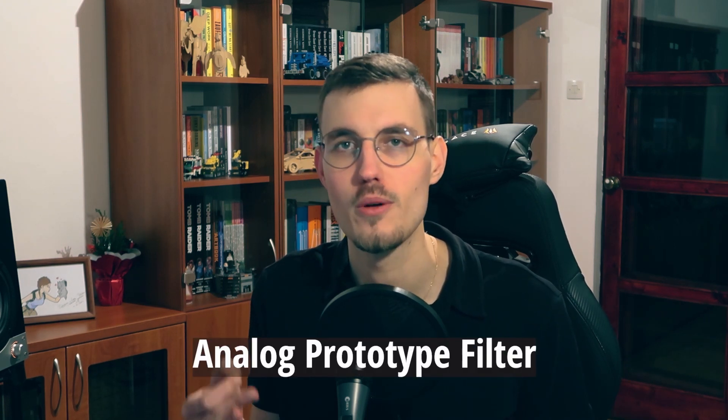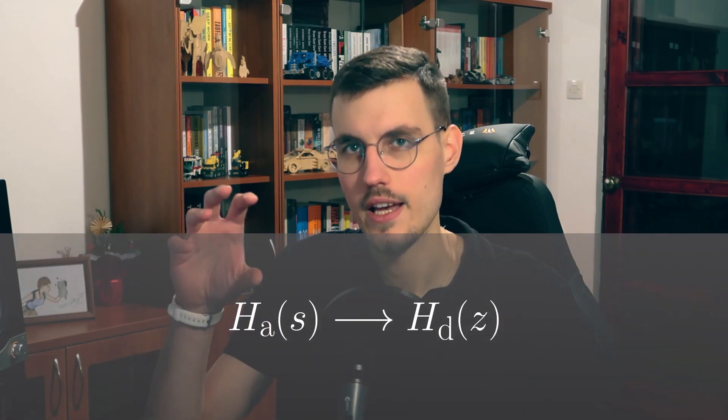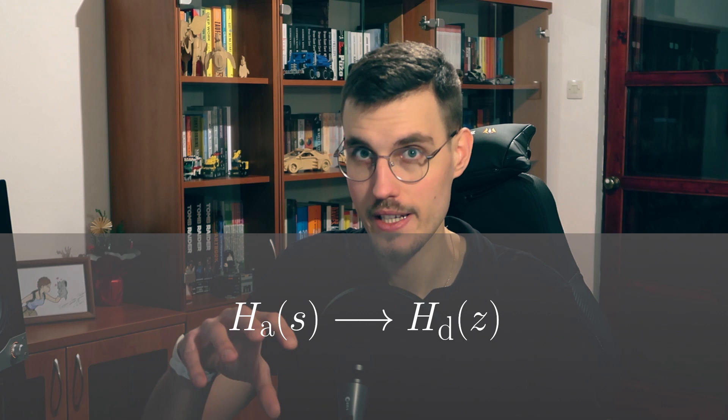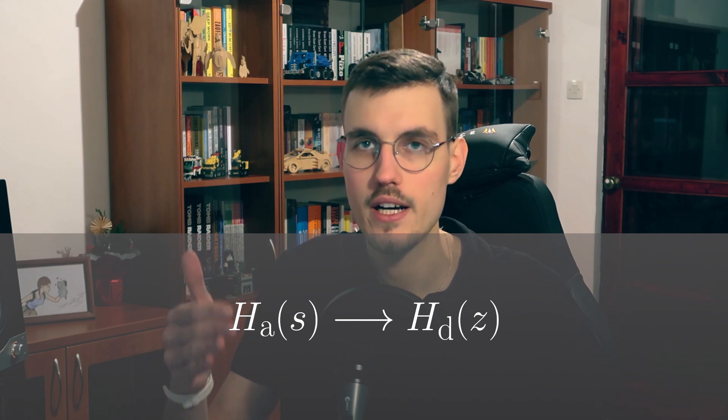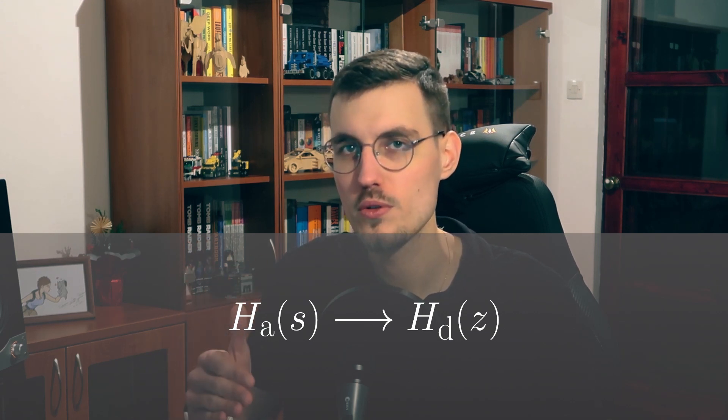Over the course of previous videos we discussed how to design a filter for parametric equalizers. We learned that in order to have an efficient, stable, and controllable infinite impulse response (IIR) filter, we need to design what is called an analog prototype. We then need to digitize this analog prototype, and in this video I will explain how this digitization process looks. Our goal is to convert a transfer function in the analog S-domain to a transfer function in the digital Z-domain. The most used method in practice for musical applications is the bilinear transform.